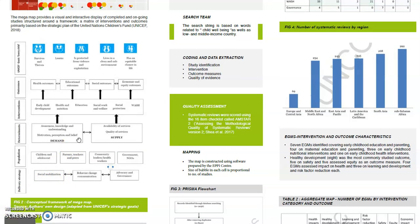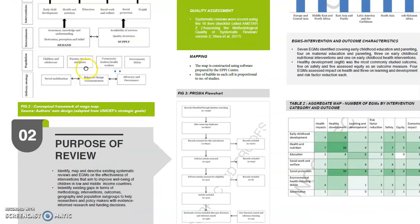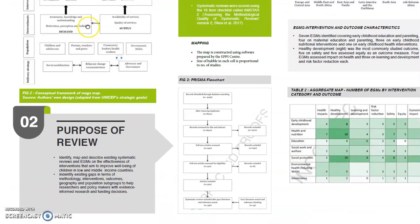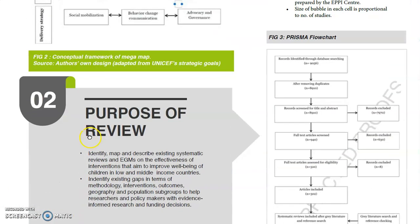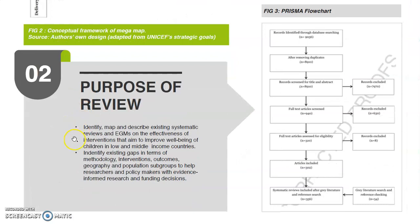Section 2 discusses the purpose of the review. The primary purpose was to map the existing evidence synthesis and EGMs on child well-being in low and middle income countries.